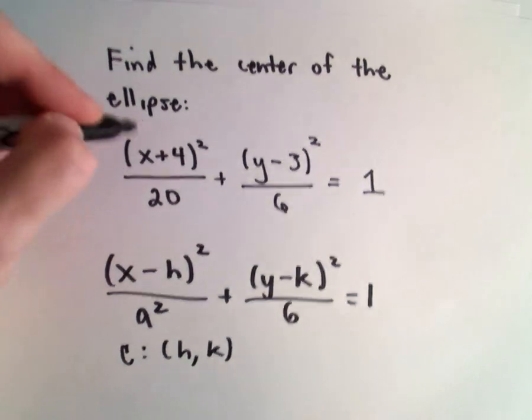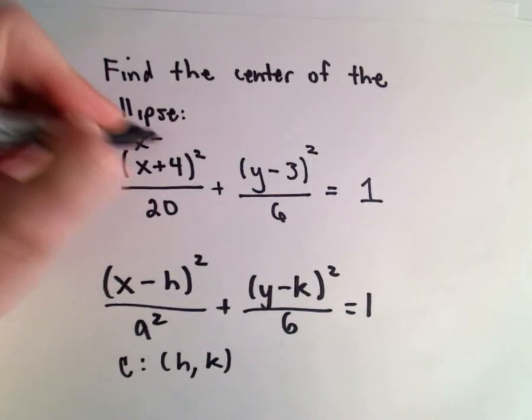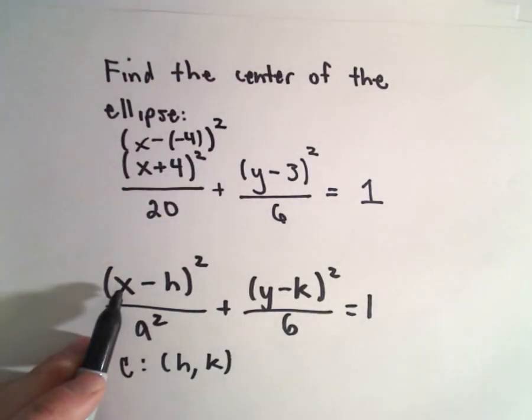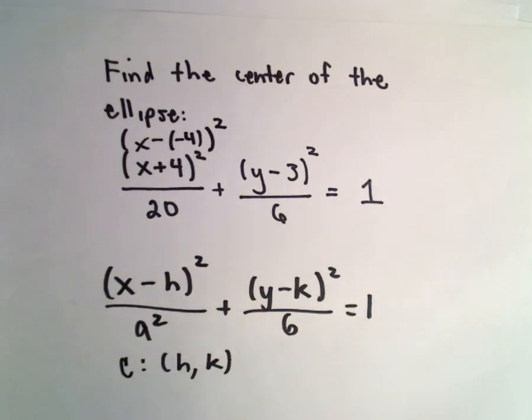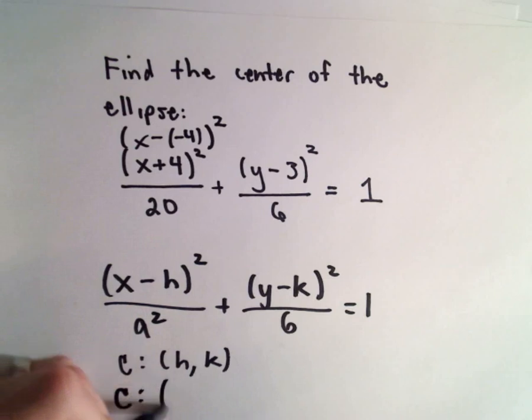Well, in this case, we could write (x+4)² as simply (x-(-4))². Again, to put it in this form, x minus a number. So in this case, our h value is going to be negative 4.